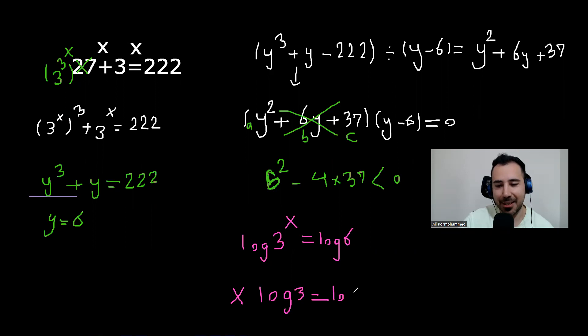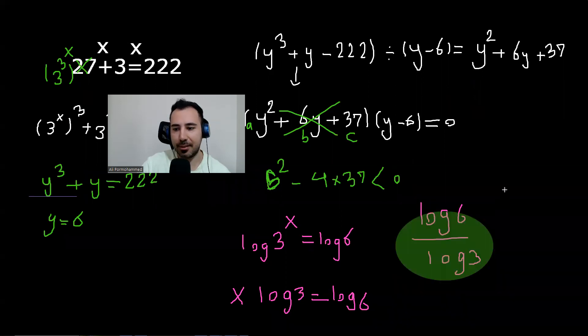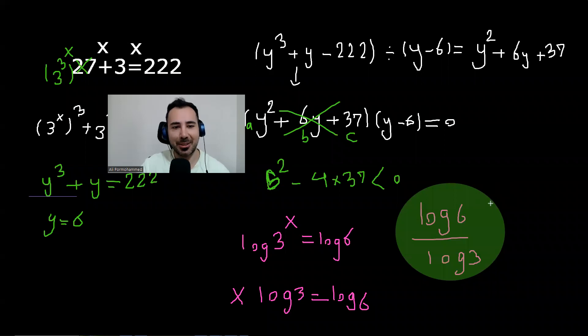I think you got the answer, right? A lot of you have already got the answer. So x would be logarithm of 6 divided by logarithm of 3. This would be the final response, this is the final answer to the question. I hope you enjoyed this video. If it was useful, please like the video and subscribe to my channel. I'll make a ton of these questions.